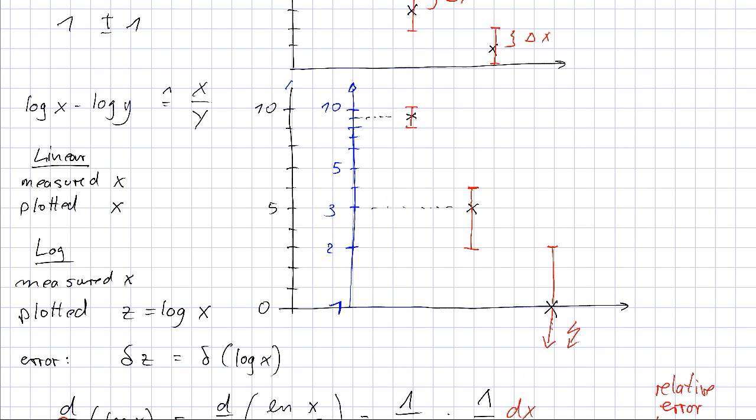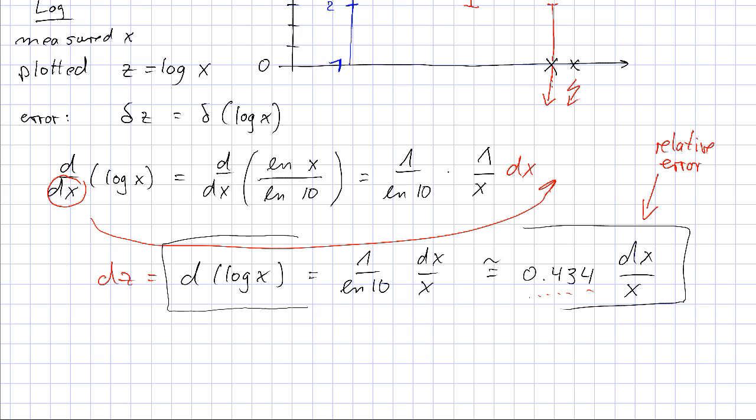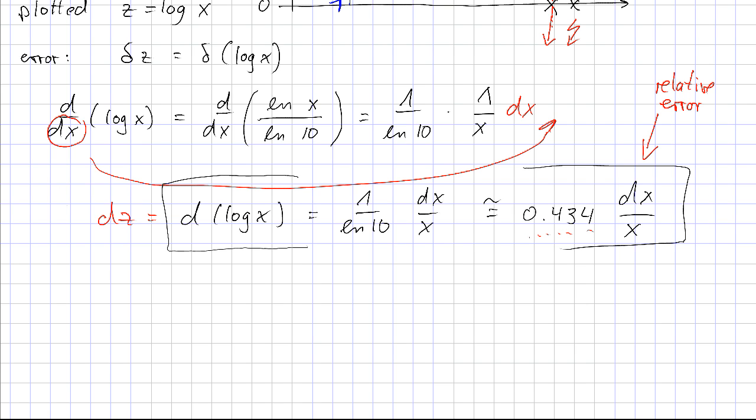Going back to our logarithmic plot, let's put in the measurements again. In blue now we would like to draw our error bars dc. That means we have to do some computations first, because we have to compute this 0.434 dx over x for each of our values. So we have x, delta x, delta x over x, and then 0.434 delta x over x.